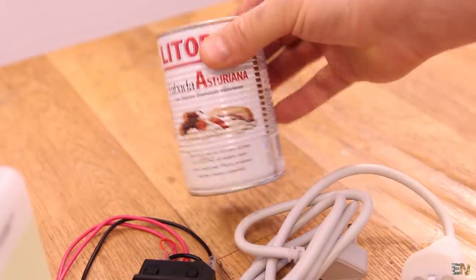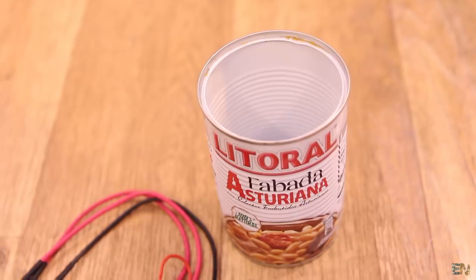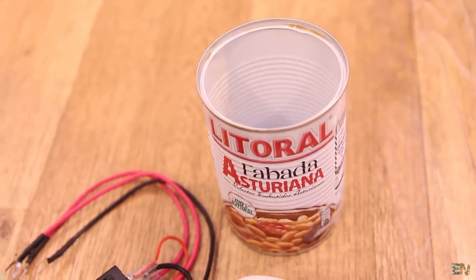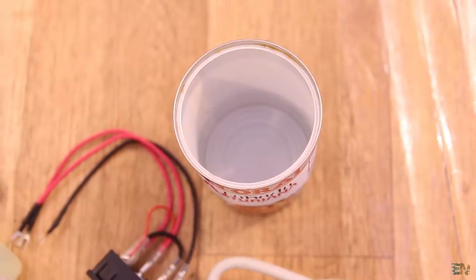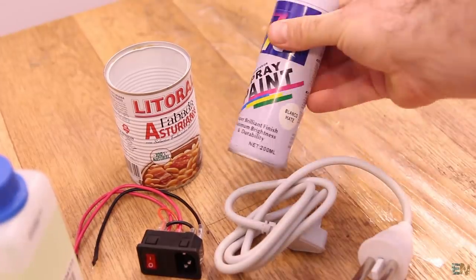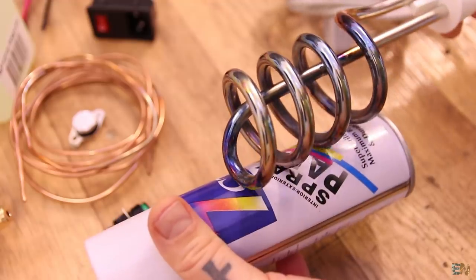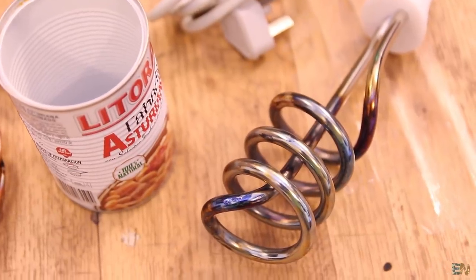OK, so we also need a tin can like this one. I have the Fabada Asturiana, 100% natural. Any other brand could work, but make sure it's made out of metal, so it could handle high temperatures. I first wanted to use some old paint spray cans, but these are too small for the heater to fit inside. Depending on your heater that you use, you might find smaller ones.